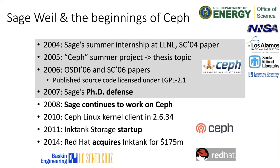What happened next was unusual. It turned out Sage was already an entrepreneur — he had already founded two companies. One of them was DreamHost, which exists today and is still successful. He was essentially independently wealthy and also motivated to work on an open source storage system he could use in web hosting, which is what DreamHost does. Storage is one of the biggest cost centers of web hosting, so that all made sense. He continued to work, and that effort of working on CEPH became part of DreamHost.